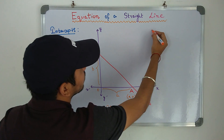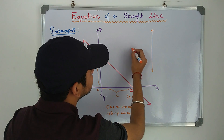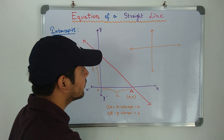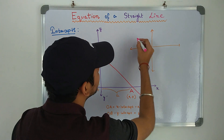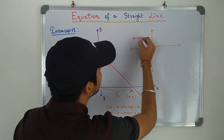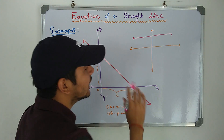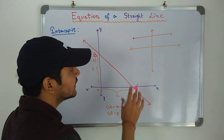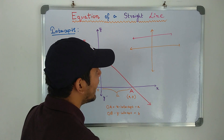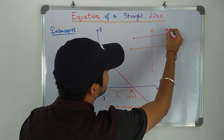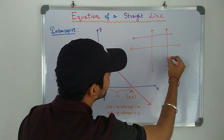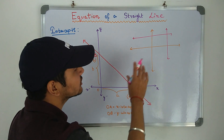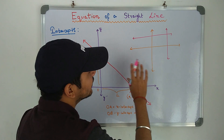A few things to note: if we have a horizontal line, it will not have an x-intercept because it does not touch the x-axis. And a vertical line has no y-intercept because it does not touch the y-axis.